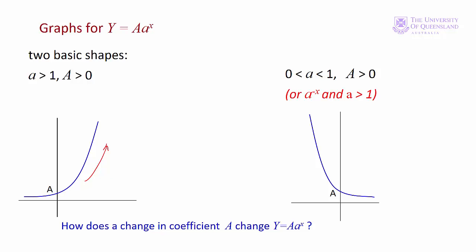For the other case of a between 0 and 1 and capital A greater than 0, when x is less than 0 the function rapidly goes off to plus infinity. When we move further to the left along the number line we're dividing by a smaller and smaller number. When x is greater than 0 the value of the function approaches 0 as x increases. So we have another asymptote here along the x-axis.